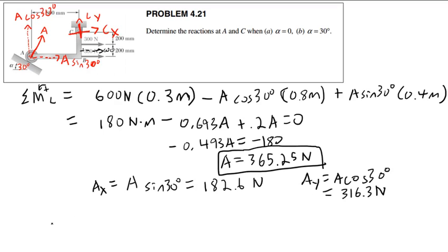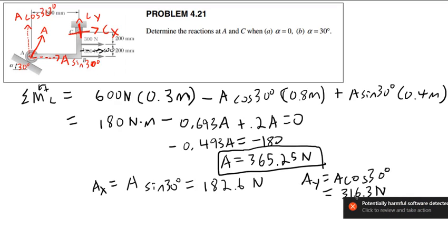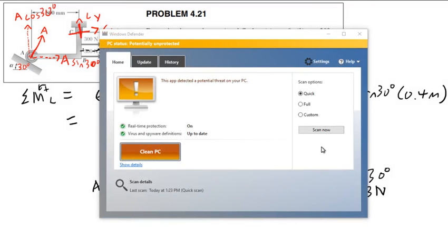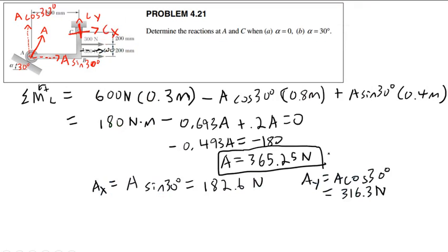Now if you want to express the answer on a test, either the magnitude with angle or the X/Y components are both fine. Let's also find CX and CY. Sum of forces in the X direction: A sine 30 plus CX plus 600 equals 0. So CX equals negative 600 minus A sine 30, giving CX equals negative 783 newtons.